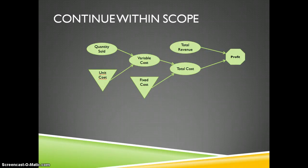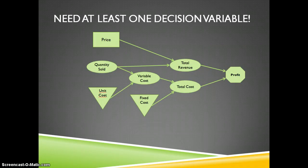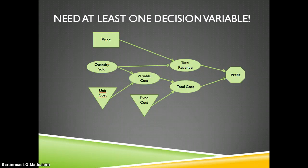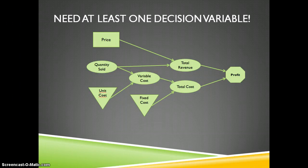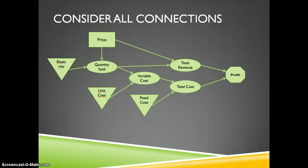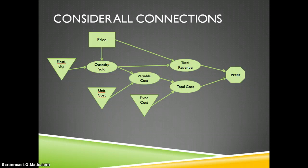We're still working back to the left and haven't had any decision variables yet. Looking at the model, price comes into play — it certainly affects the revenue side. With quantity sold and price, we can determine total revenue. All intermediate variables are now present to get from price to profit. But there's a missing link: the price you set probably influences the quantity you sell, and that effect is determined by an external parameter called price elasticity.